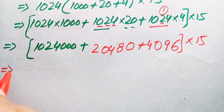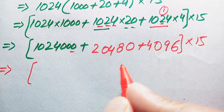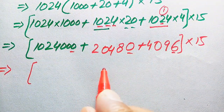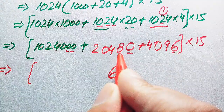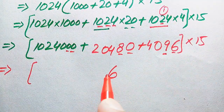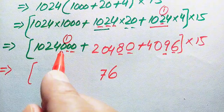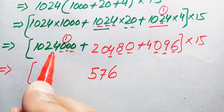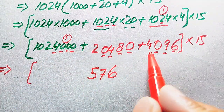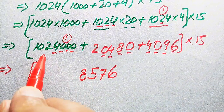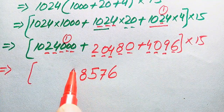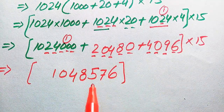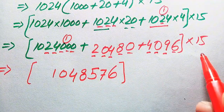Now we sum up all these values using traditional addition: 1,024,000 plus 20,480 plus 4,096. Adding the digits column by column: 0+0+6=6; 0+8+9=17, write 7 carry 1; 0+4+0=4, plus carry gives 5; 4+0+4=8; 2+2=4; the remaining digits are 0 and 1. So 1024 squared equals 1,048,576. Now we multiply this by 15.